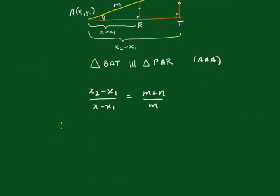So now we'll have m outside of (x2 - x1) equals (m + n) outside of (x - x1), just cross-multiplying there.